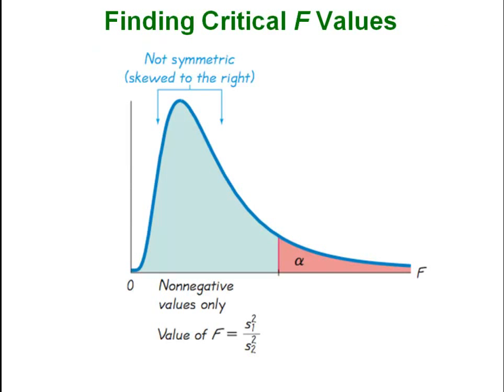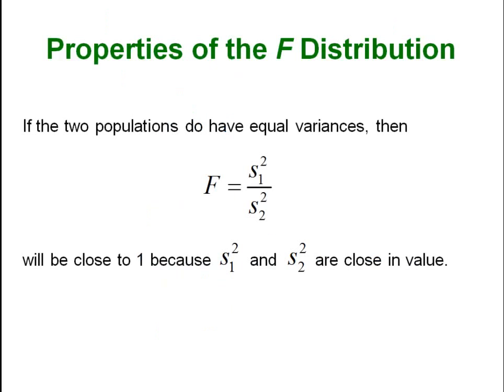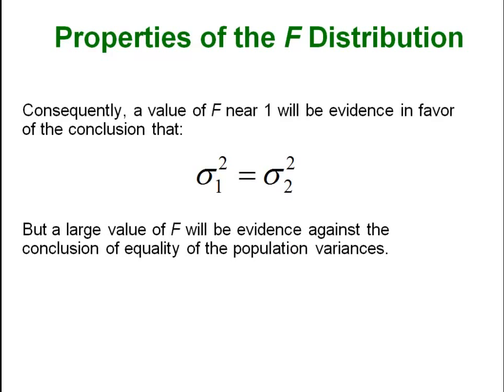Here is what an F distribution looks like — you will notice it is very similar to the chi-square in shape. If the two populations have equal variances then F is going to be equal to one or really close to one. You are basically looking for F values that are close to one if you are trying to show that the two populations have equal variances. Conversely, if F is far away from one, that shows the two populations have different variances.